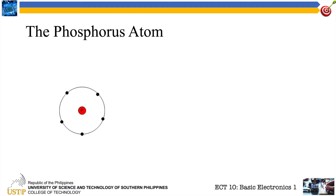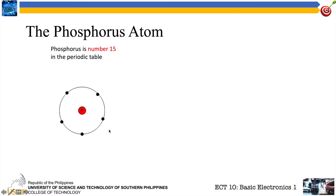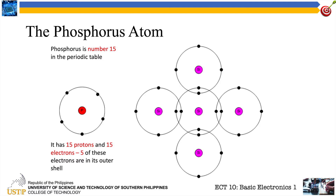What happens to our silicon material if we introduce another atom? In our silicon, as I discussed, silicon has four valence electrons in its outermost shell. We're going to study what happens to our silicon material if we introduce a phosphorus atom. Phosphorus has atomic number 15 in the periodic table. It has 15 protons and 15 electrons, and five of these electrons are in its outer shell, available for conduction.